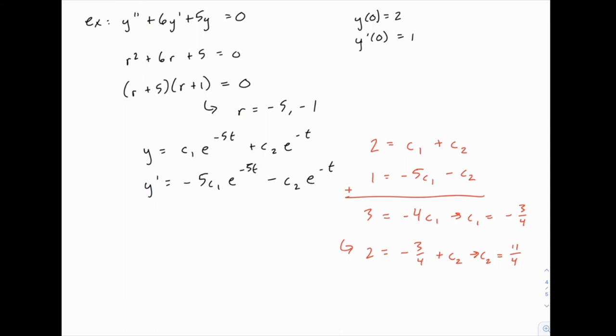So again, if you need to review this algebra, this would be a good time to do it. But at the end of that, we get those two values for c1 and c2, which means we are done. Our final answer is negative 3 fourths times e to the negative 5t plus 11 fourths e to the negative t.